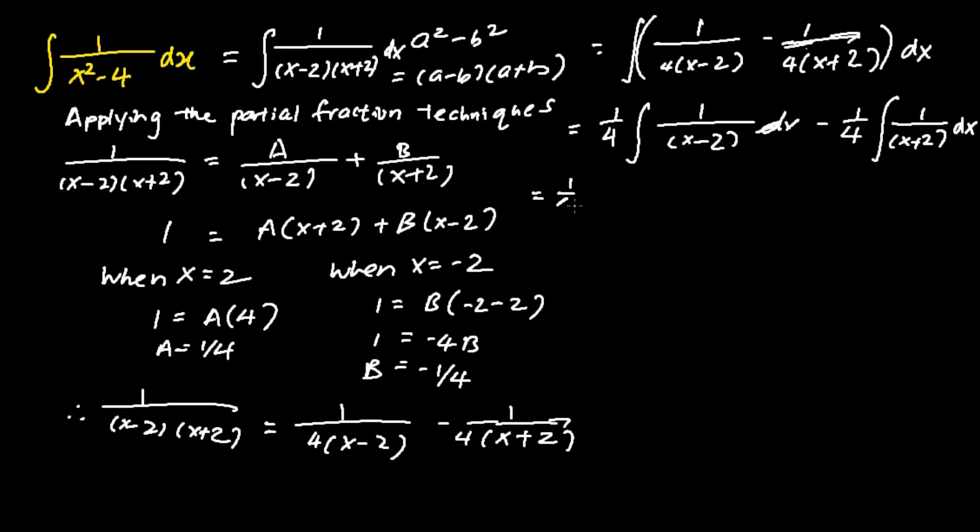Now I can evaluate the two integrals. The integral of 1 over (x minus 2) equals ln absolute value of (x minus 2), whereas the second integral of 1 over (x plus 2) is ln absolute value of (x plus 2) plus C.